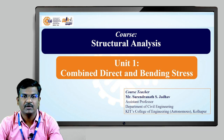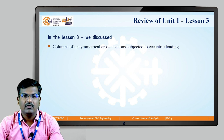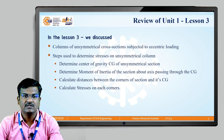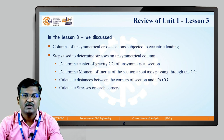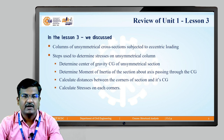This is unit number one: Combined, Direct and Bending Stress, lesson number four. Before that, let us recall what we discussed in lesson number three. We discussed about the column of unsymmetrical cross section subjected to eccentric load. The steps are slightly different from symmetrical cross sections. Steps used to determine the stresses on an unsymmetrical column section are: determine the CG of the unsymmetrical section, determine the moment of inertia about axis passing through the CG, calculate the distance between the corners of the section and its CG, and then calculate the stresses on each corner using regular formulas.